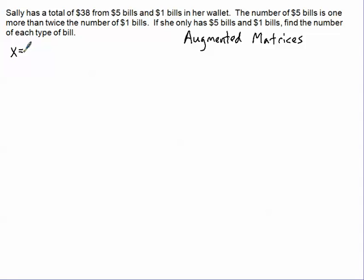So if we've already defined x to be the number of $5 bills, and y to be the number of $1 bills, then we actually already have our equations that we looked at in class. 5x plus 1y equals 38, and that's the amount of money that she has, and that 1x equals 2y plus 1, and that's from the second sentence.